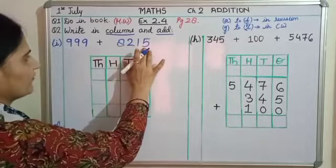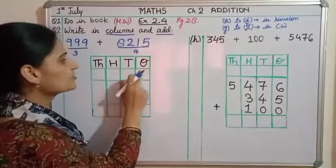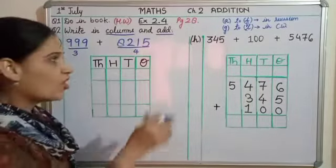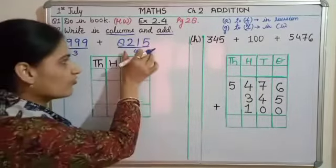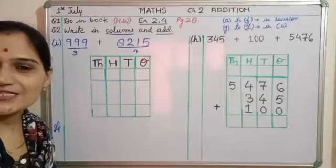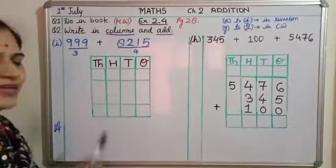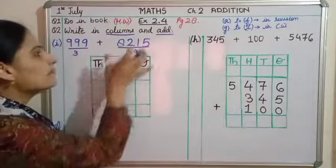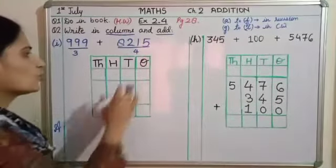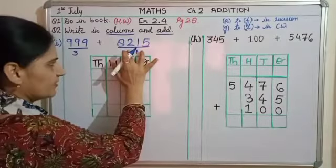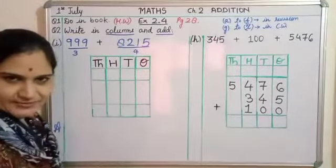See children, when you have two numbers to be added, arranging these numbers in the columns is very important. This is what you have to be careful about and where you should not make mistakes. This 999 is a three digit number. 8215 is a four digit number. When we have to add three digit or four digit numbers, their placing is important.